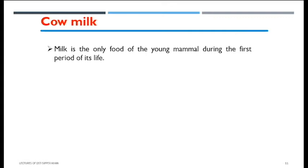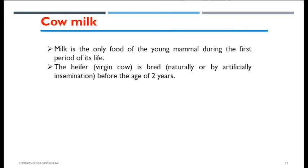A heifer is a cow's baby approximately younger than two years of age. It is a virgin cow which has not yet been naturally or artificially inseminated. Insemination is the process of introduction of semen to impregnate the cow. Before the age of two years, a heifer is then impregnated naturally or artificially.